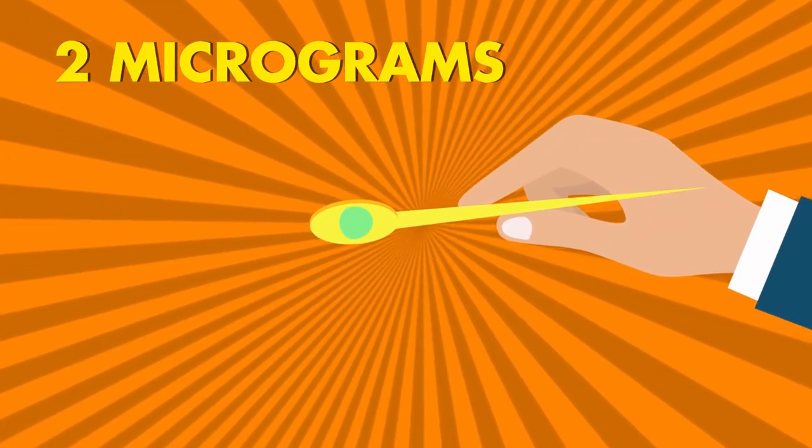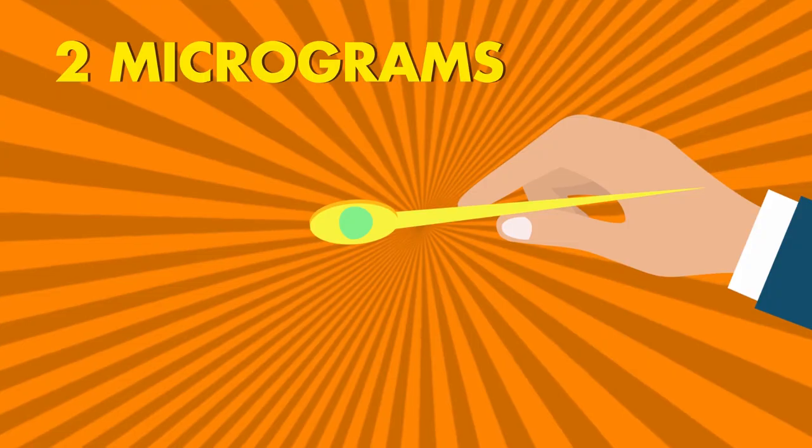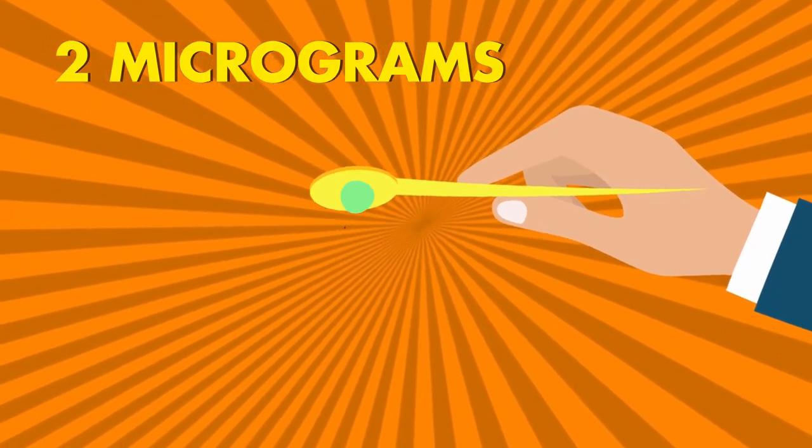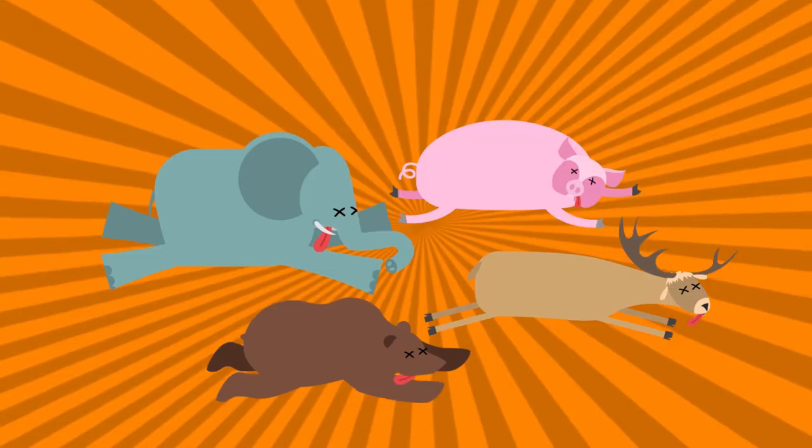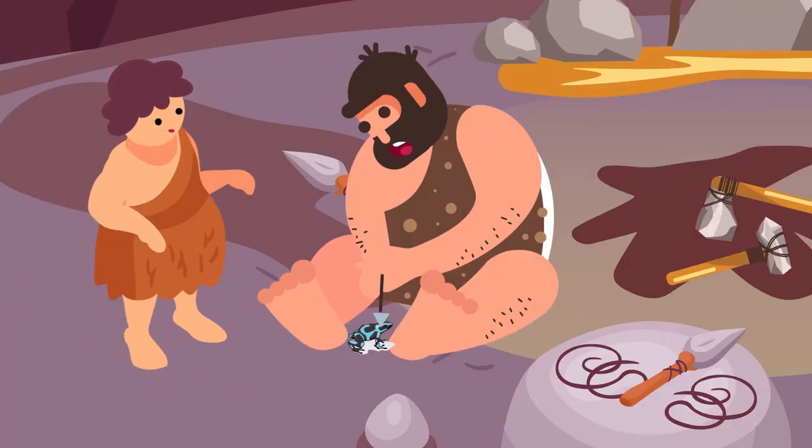Only two micrograms of this lethal toxin, which is just the amount that would need to fit on the head of a pin, can take out any mammal, no questions asked. In fact, these amphibians are called dart frogs because their toxic secretion was used in the past to poison the tip of blow darts.